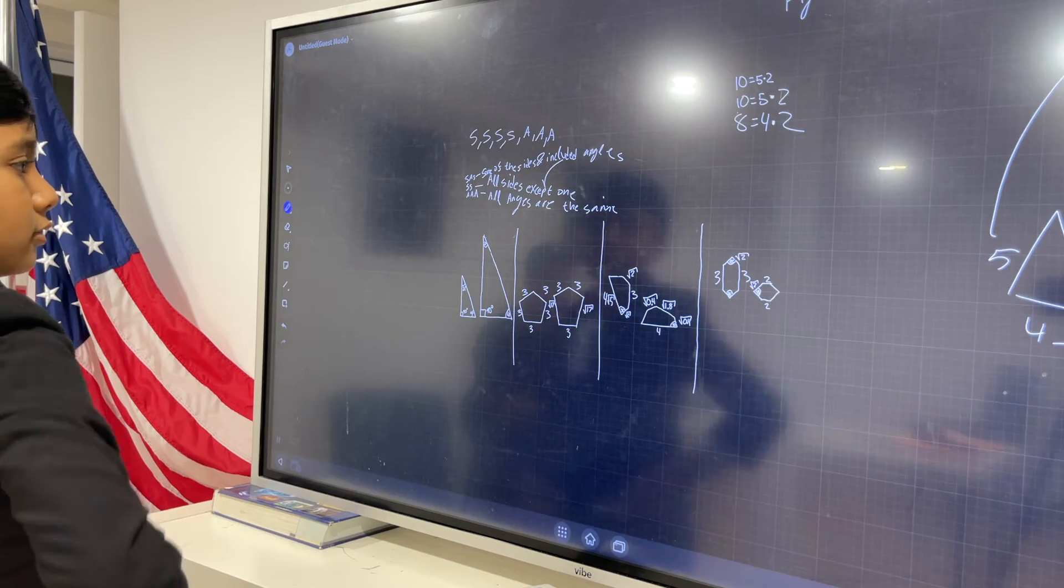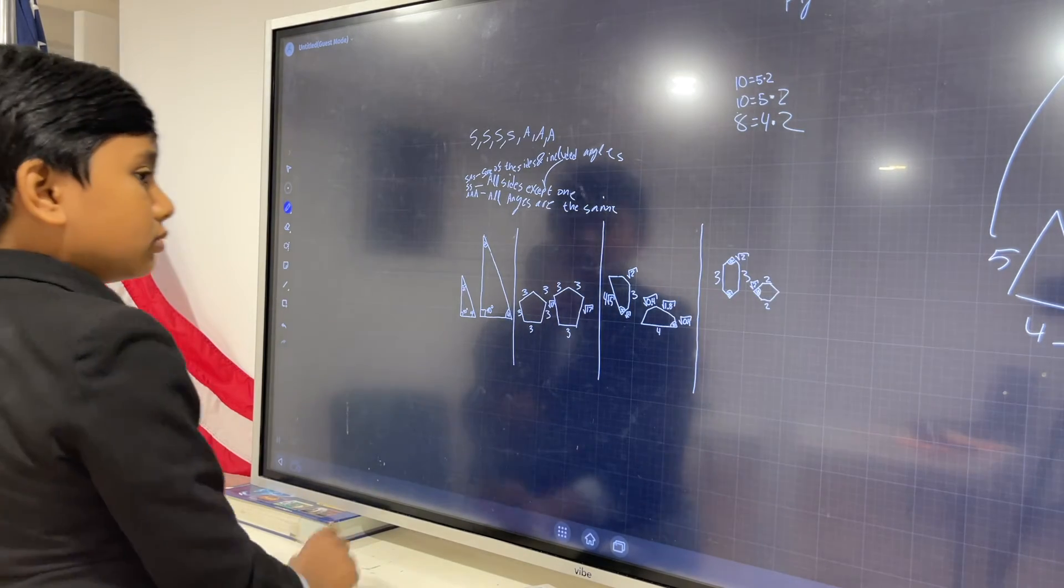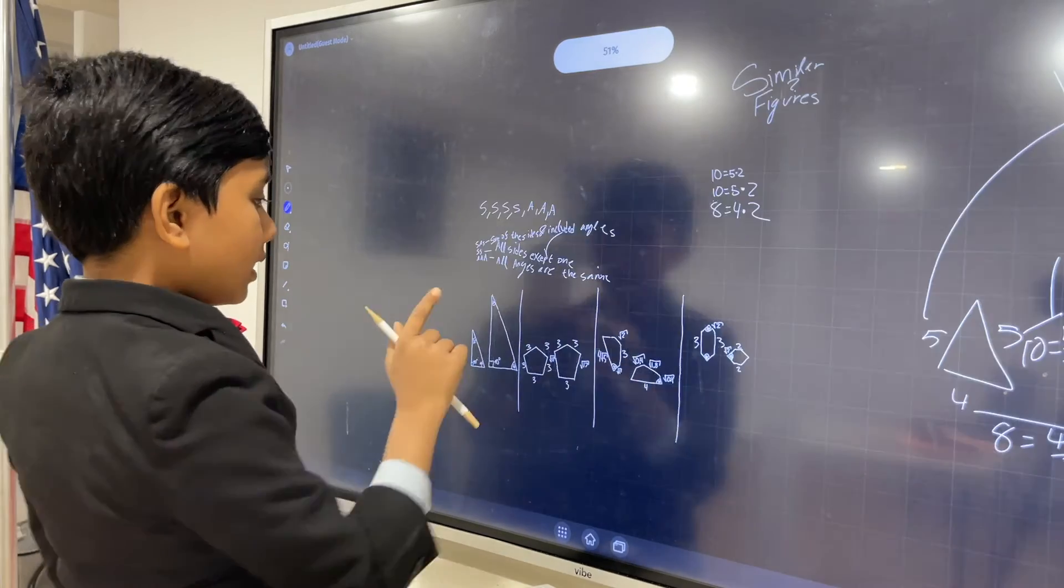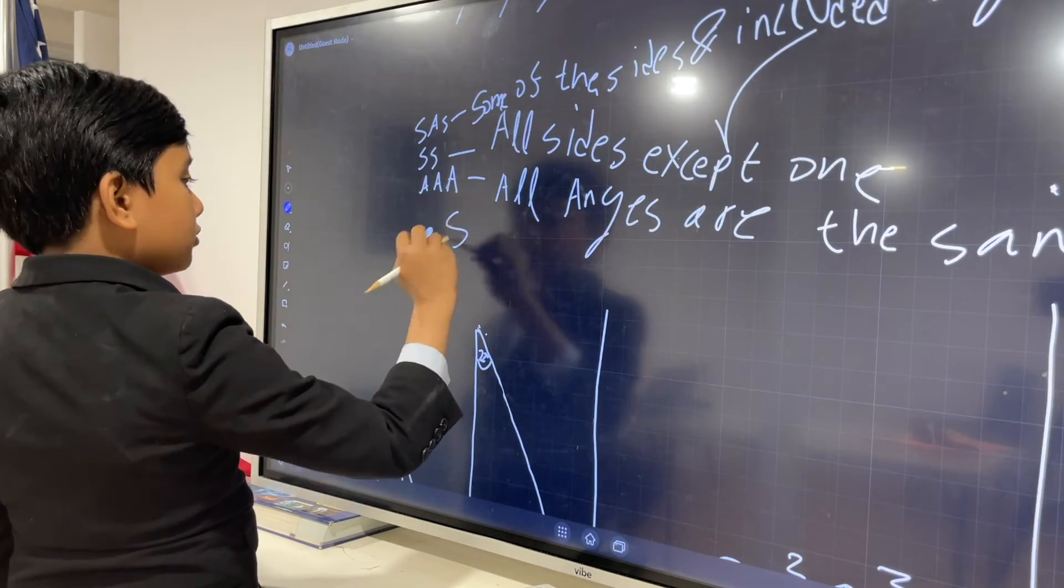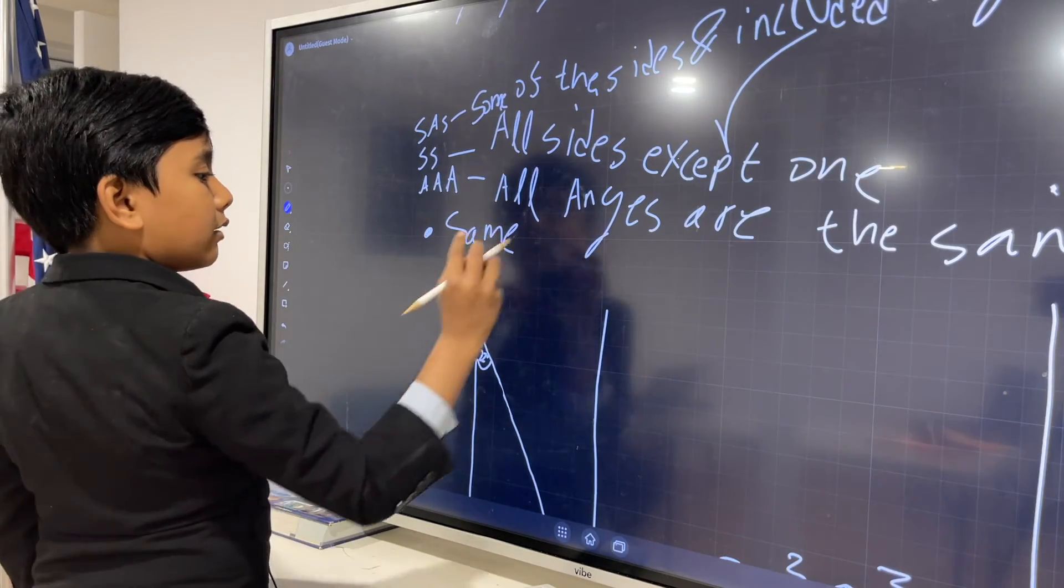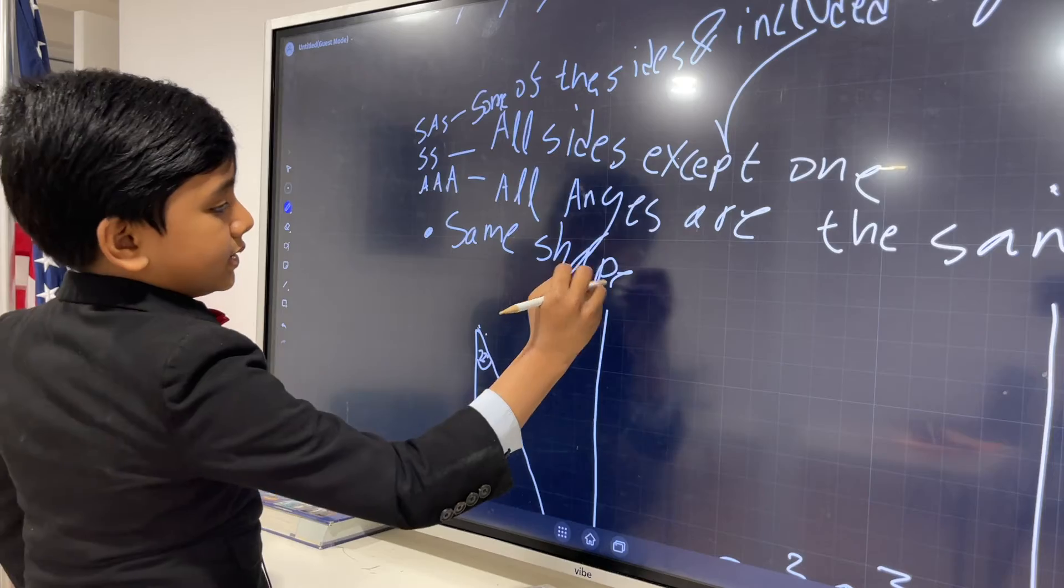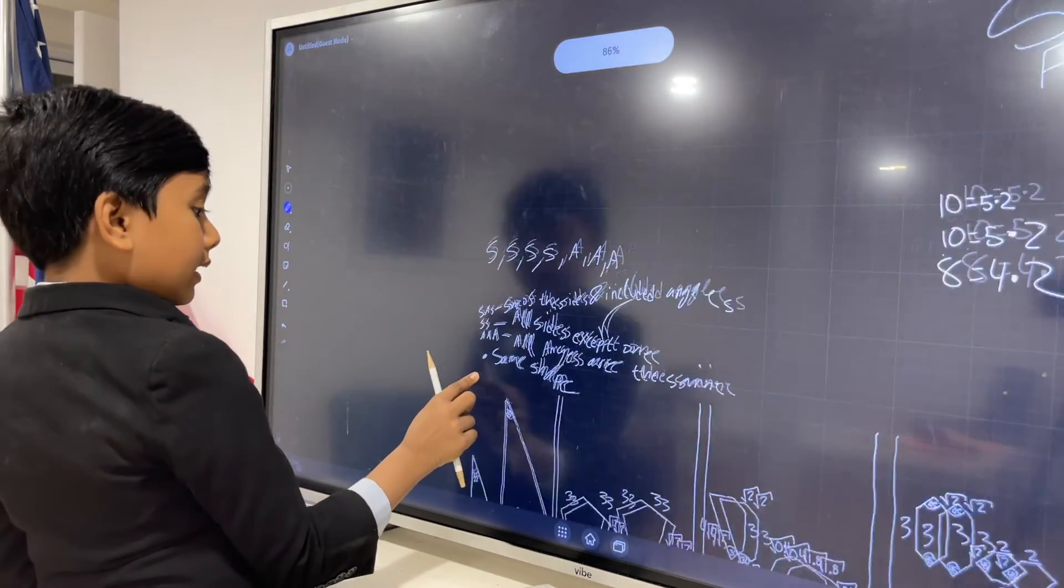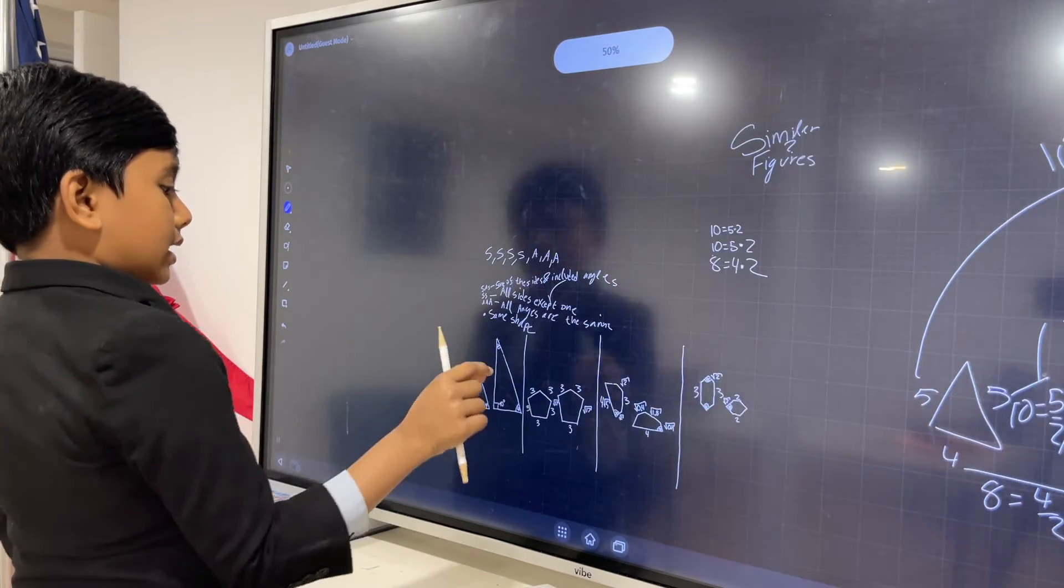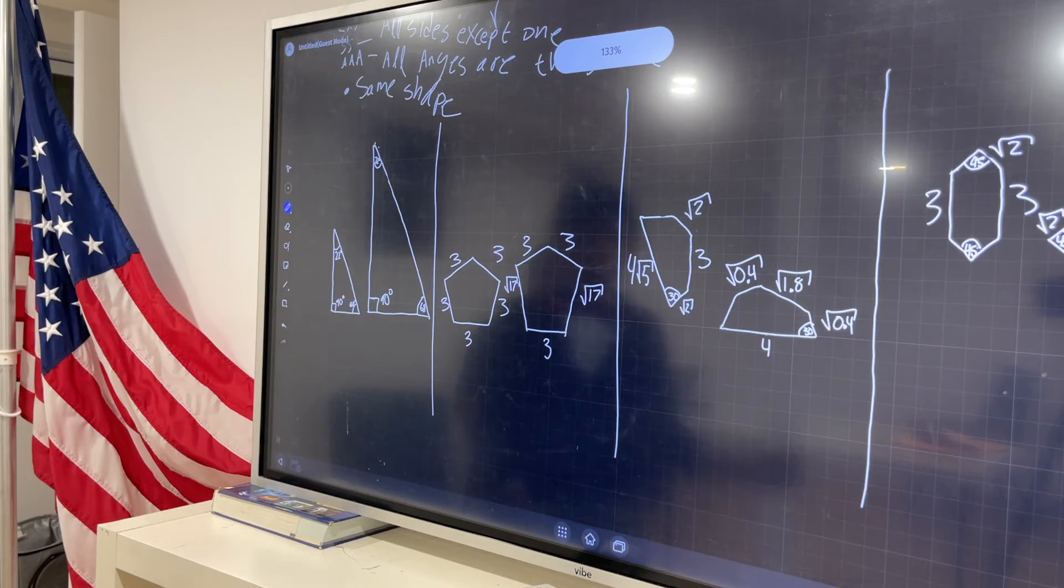Alright, so those are the three strategies to find similarity. And also some important things to know, you should always find out if they're the same shape, so if they don't even remotely resemble each other, you know they're not similar. And that's really all I can tell you. So now let's get started with four examples.